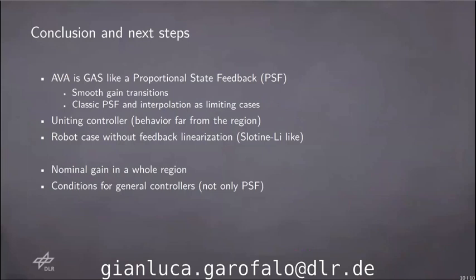As future steps, an easy extension of the controller would be the use of the nominal compliance, not only when the control error approaches zero, but in an entire region. While this extension is pretty straightforward, a more challenging task would be to find conditions that allow the use of different local controllers beside our version of state feedback.